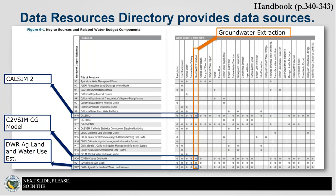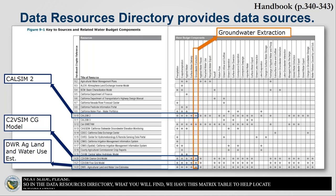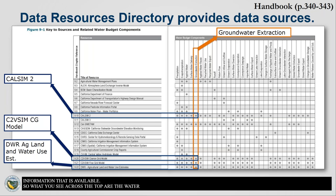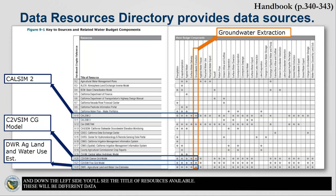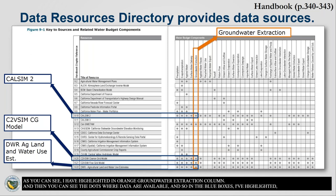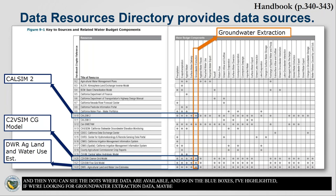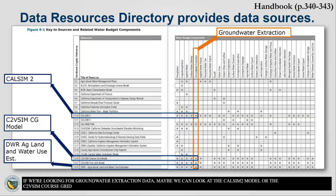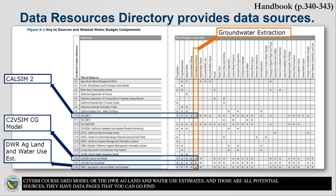On the data resources directory, there is a matrix table to help locate available information. Water budget components are shown across the top, and down the left side are the titles of available resources, each assigned a number. For groundwater extraction, I've highlighted the column in orange, and you can see dots where data are available. Sources highlighted for groundwater extraction include the CalSim 2 model, the C2VSIM coarse grid model, and the DWR Ag Land and Water Use estimates. Each has a data page in the data resources directory where you can find more information.